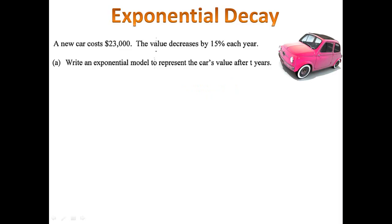We want to write an exponential model to represent the car's value after t years. We know it's exponential because it's decreasing at a rate that's given by a percent, 15%. We identify the variables, a is 23,000, r is 15, and t is unknown.